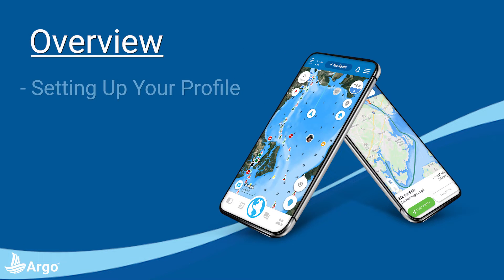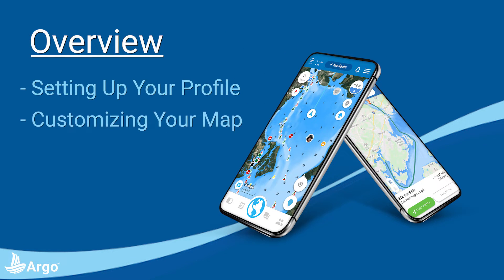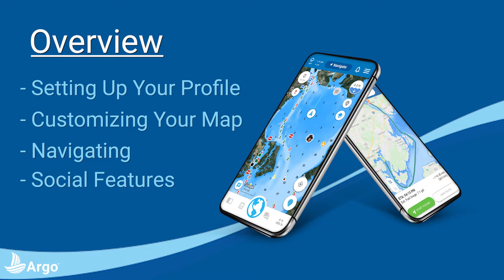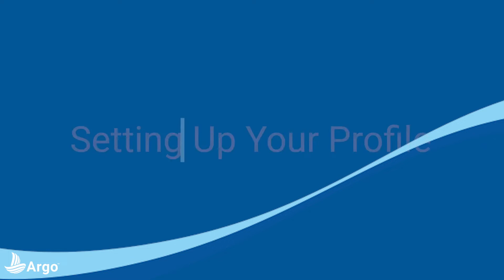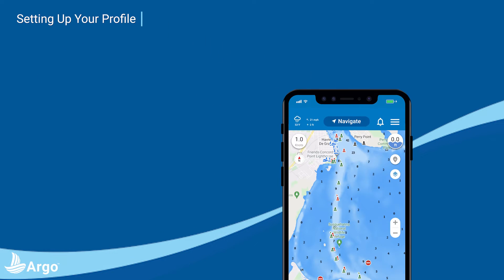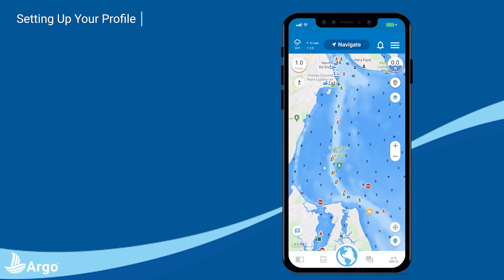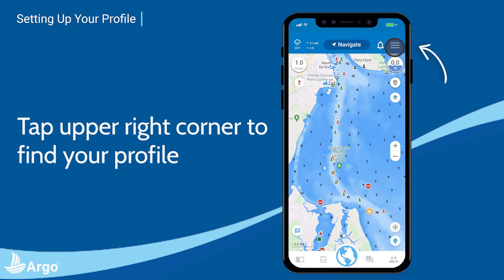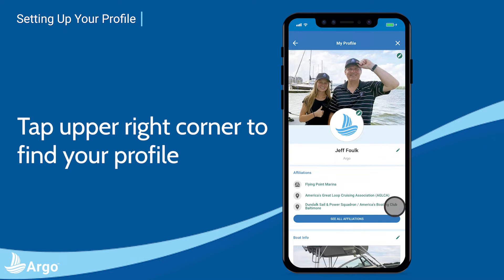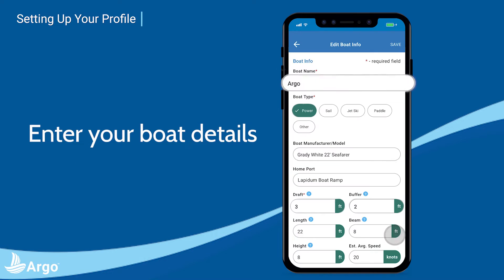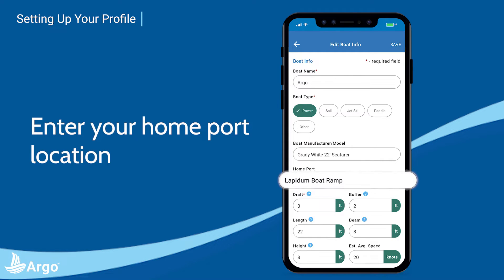Setting up your profile, customizing your map, navigating, and using some of our social and community features. First, setting up your profile. Tap on the menu icon in the upper right corner of the screen. As a minimum, go to the boat details. Enter your boat's name, type, and draft and buffer. You can also enter your home port and other info to make it easier when creating a route and to get your ETA and estimated fuel usage.